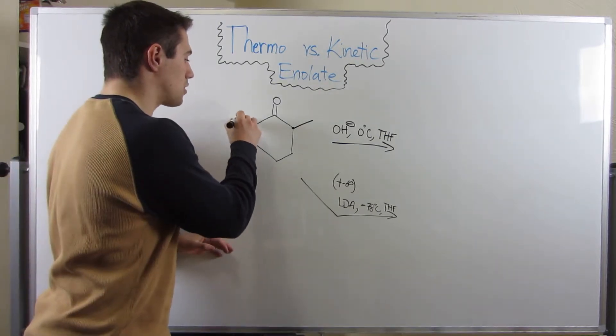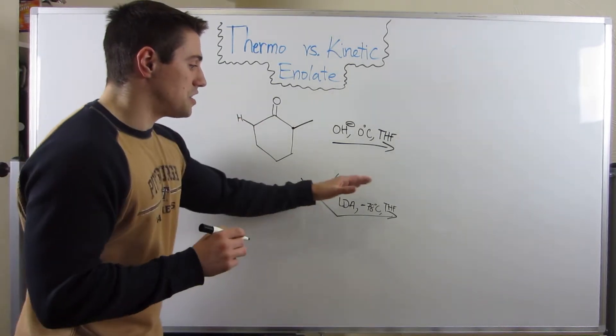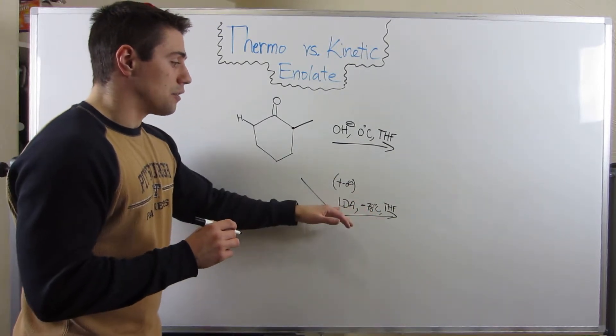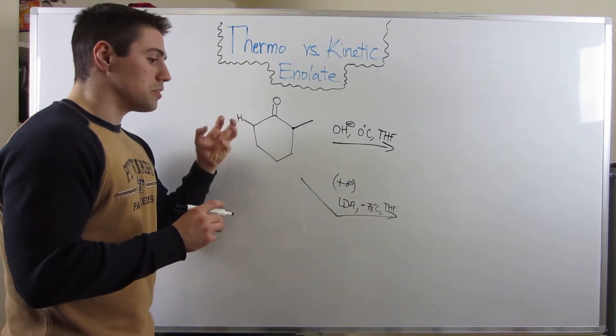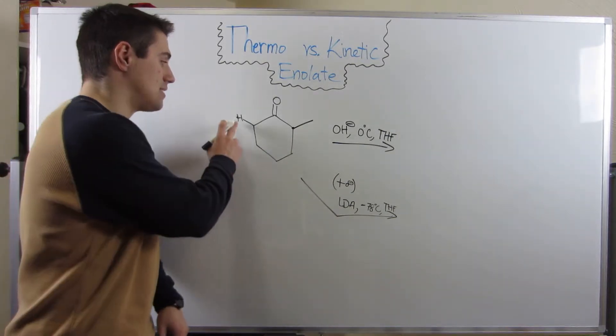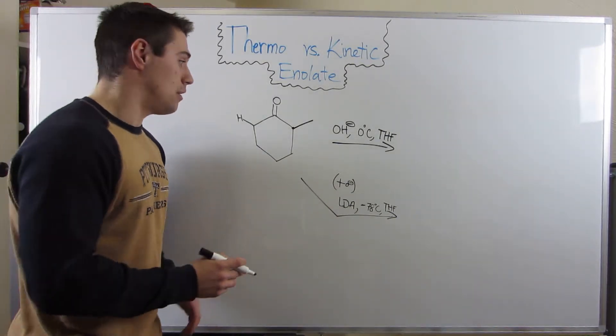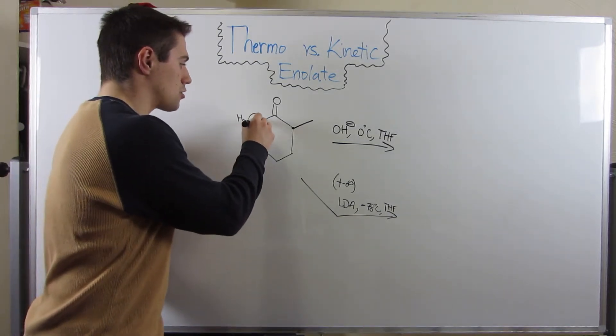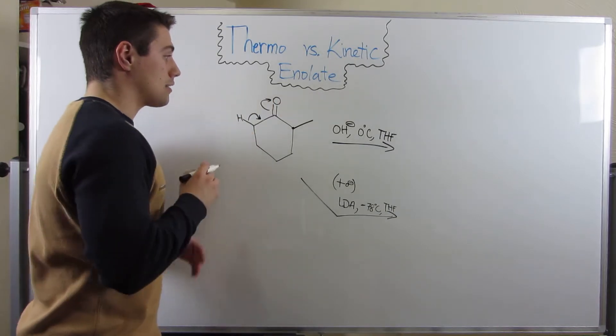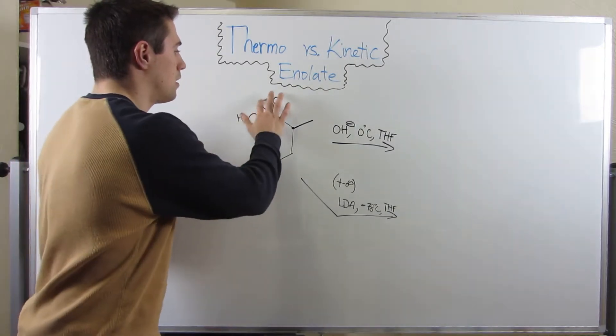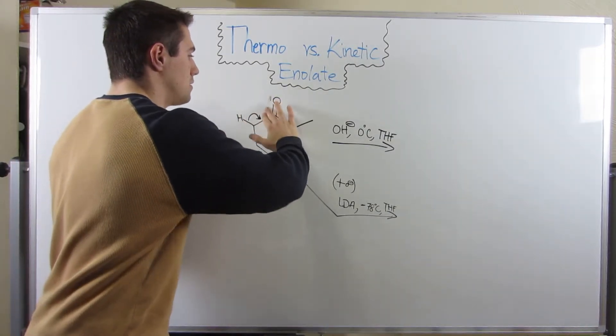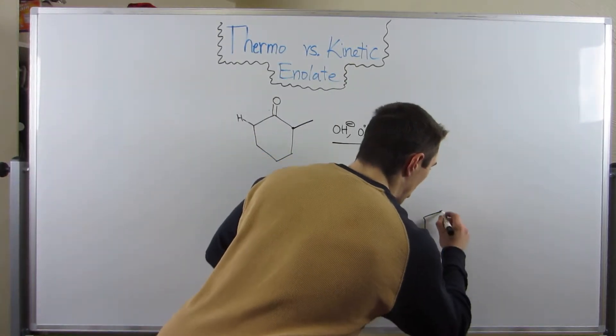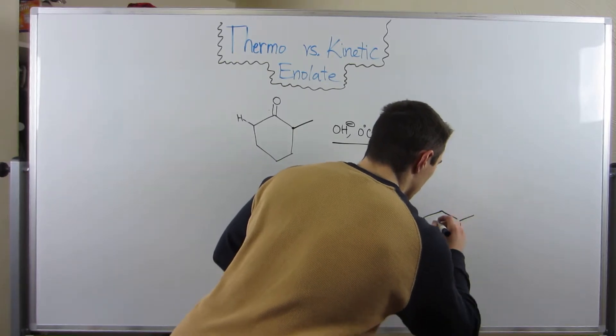So when you're looking for the kinetic enolate, when you see these conditions—negative 78 degrees C, LDA—you look for the least sterically encumbered alpha carbon, and that's the alpha proton you grab. So we would grab him, electrons would swing down here, we would kick electrons up to the oxygen. We make the enolate, the double bond goes to the left.